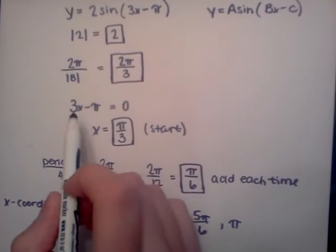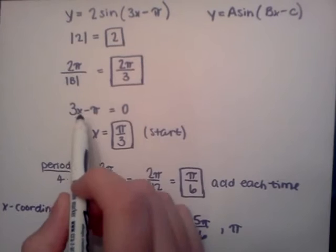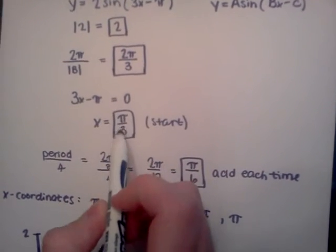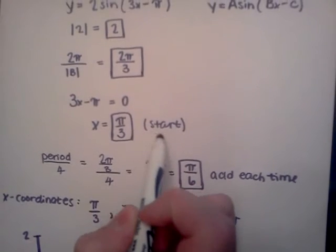To find the phase shift, you set bx minus c equals 0. So it's 3x minus pi equals 0, x equals pi over 3. This is also where you start.